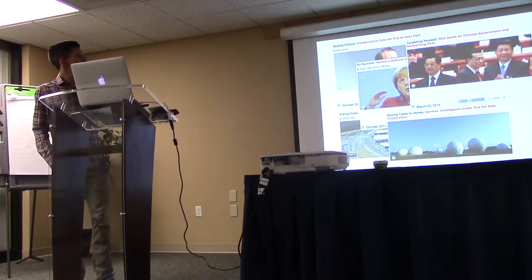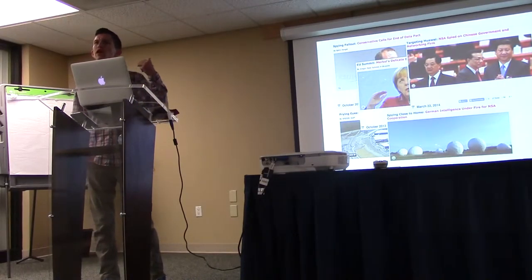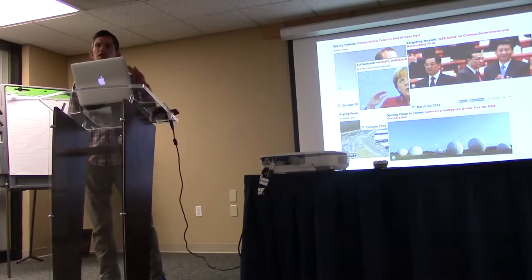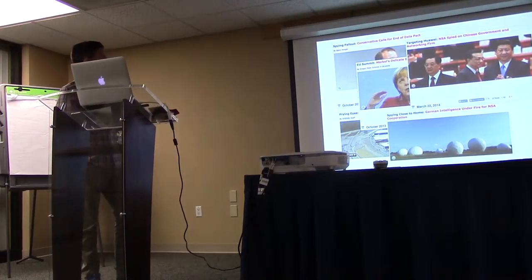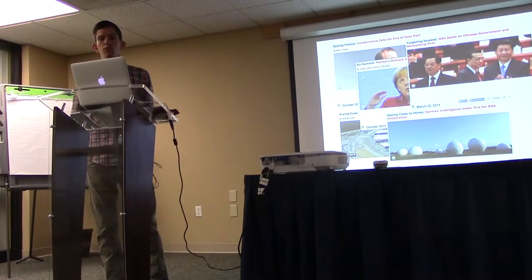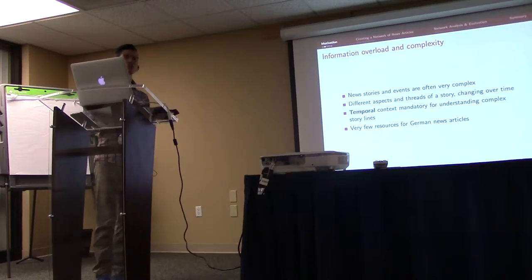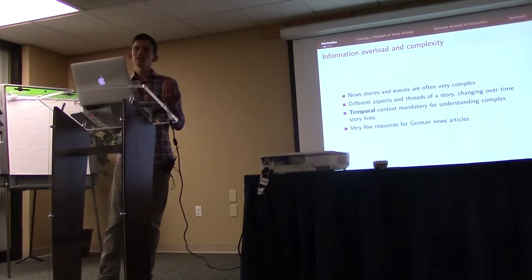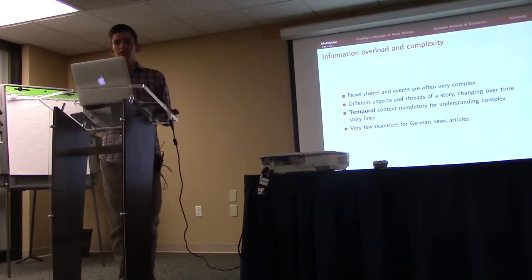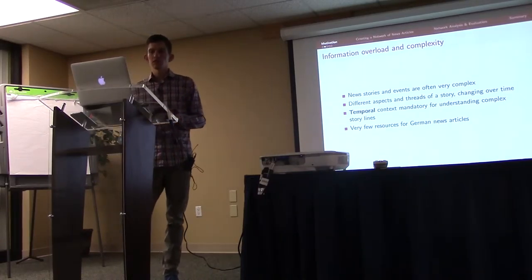Just looking at these articles, you might see that it's quite difficult if you're reading one article and want to determine the relationship to other articles, if you don't have any background knowledge and aren't familiar with the topic. In addition, looking at the timestamps, there are articles published as early as 2013, but also articles published in the recent past. So news stories and news events are often very complex, mostly due to their dynamic nature. There are very different aspects and story threads that are merging and splitting apart, and constantly changing over time.